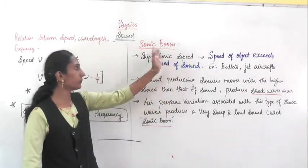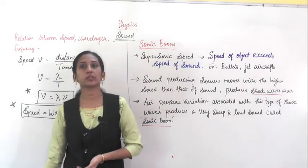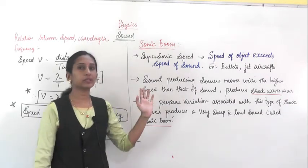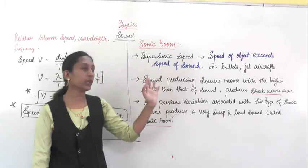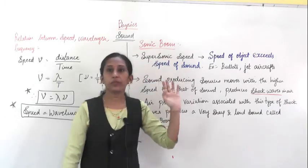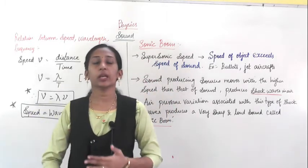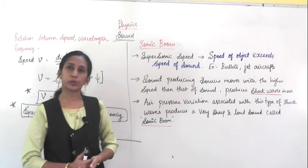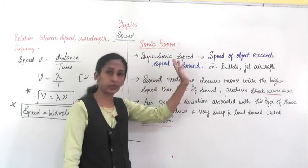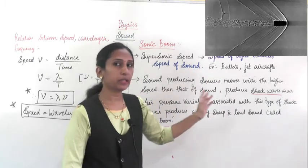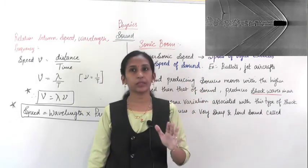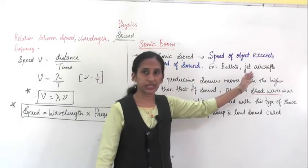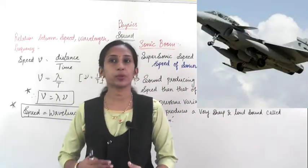In the context of sonic boom — supersonic: you have heard about supersonic jets or aircraft. From the name itself, it suggests a very high speed, that is supersonic speed. What is supersonic speed? If the speed of any object exceeds — means if the speed of any object is faster than the speed of sound — then that speed is called supersonic speed. Examples include bullets, which move at a speed higher than the speed of sound, and jet aircraft. These are examples of objects having supersonic speed.